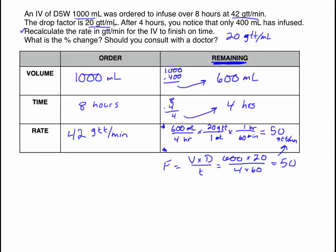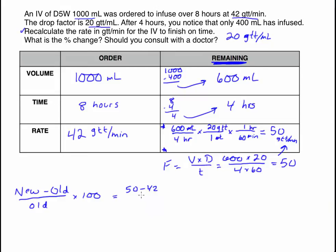The second part is: what is the percent change, and should we consult the doctor? The percent change formula is: new amount minus old amount, divided by the old amount, times 100. The new amount is 50 — our new rate. The original order was 42. Divide by the original amount of 42. Taking 50 minus 42 gives us 8 — we increased by 8. And 8 divided by 42 times 100...